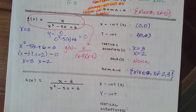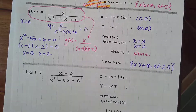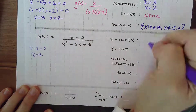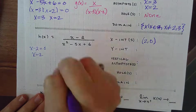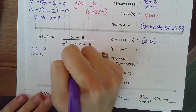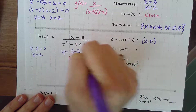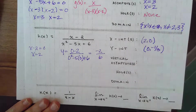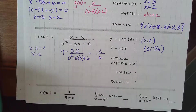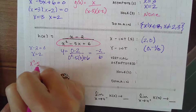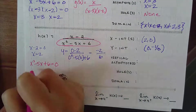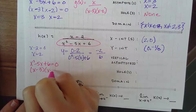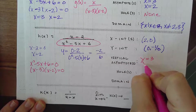Let's try the last one — pause if you want to try it yourself. X-intercept: set the numerator equal to zero, I get x equals 2. Y-intercept: plug zero in for x. Zero minus 2 over zero squared times 5, or 5 times zero plus 6 — I get negative 2 over 6, which reduces to negative one-third. Vertical asymptote: set the denominator x squared minus 5x plus 6 equal to zero. This factors as (x−3)(x−2), giving x equals 3 and x equals 2.